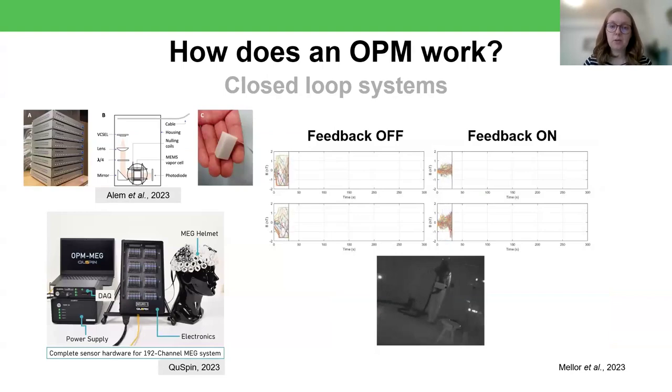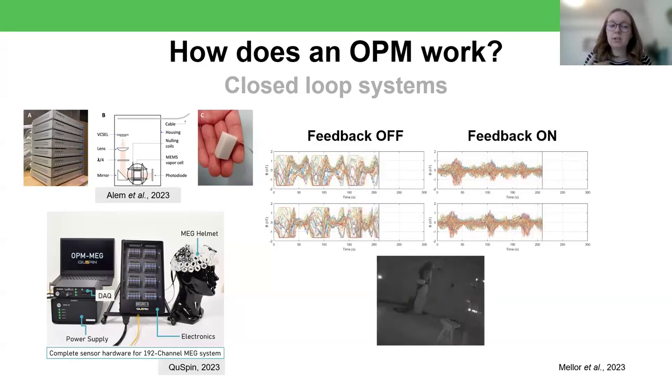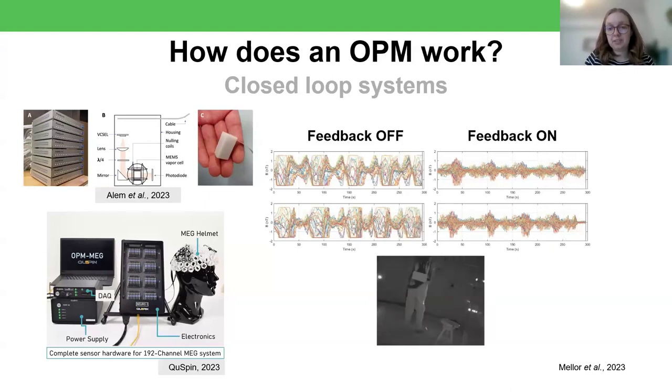Additionally, more and more people are working with what are called closed-loop OPM systems. And so this uses the same idea of active magnetic shielding, except rather than canceling out the field in the entire space, it's canceling it out just at the OPM sensor. And these generally run in real time. So the magnetic field is recorded by the sensor and then fed back to the coils on the sensor in order to cancel it out. The latest Fieldline and Quspin OPMs, so those are the two biggest OPM manufacturers for MEG, both their latest systems use this kind of closed-loop design.